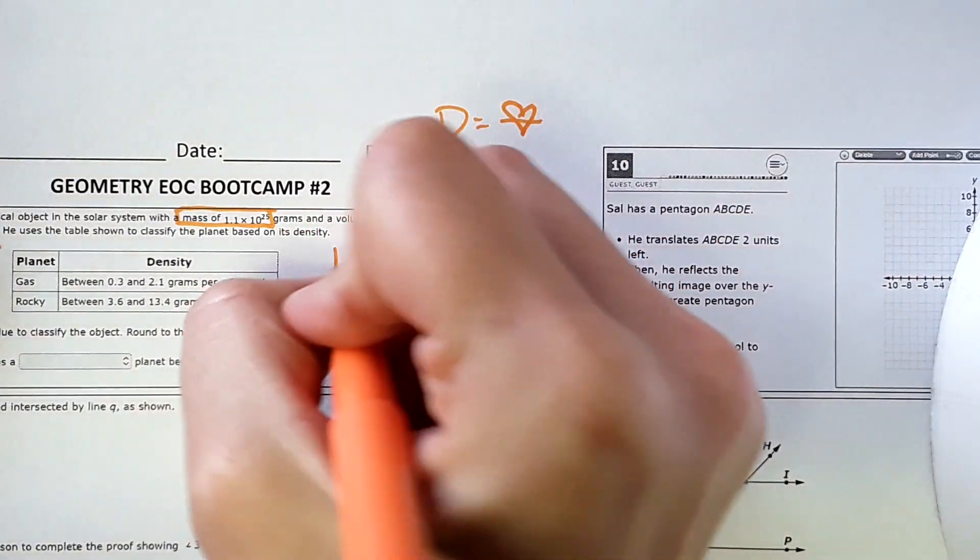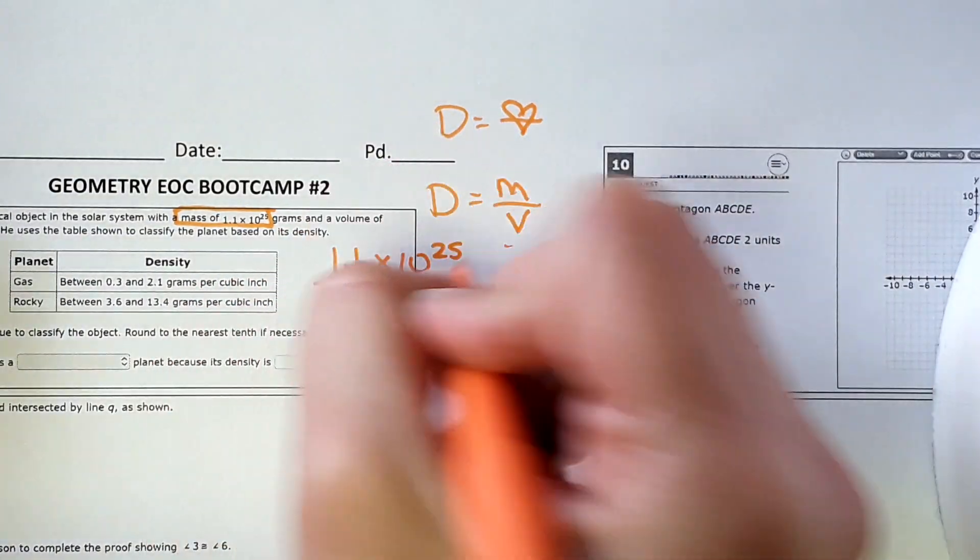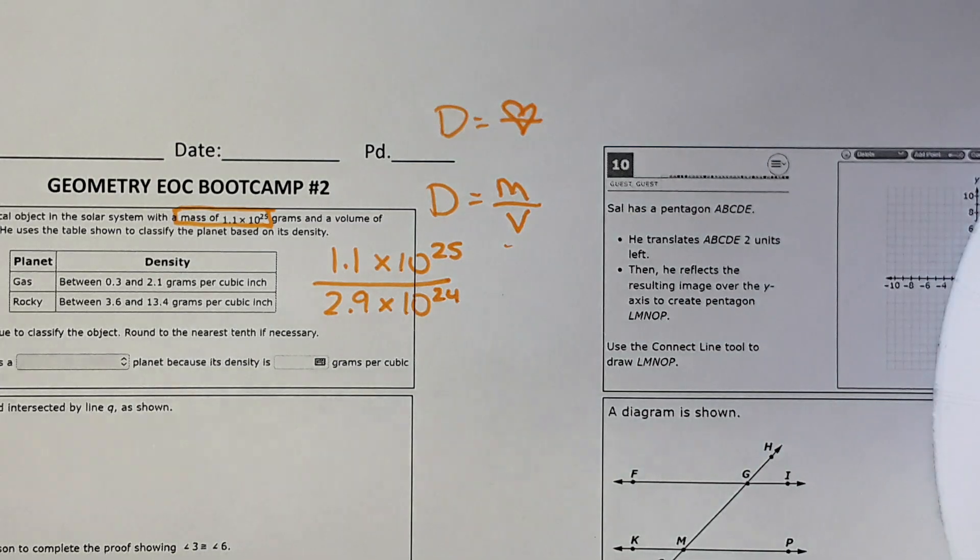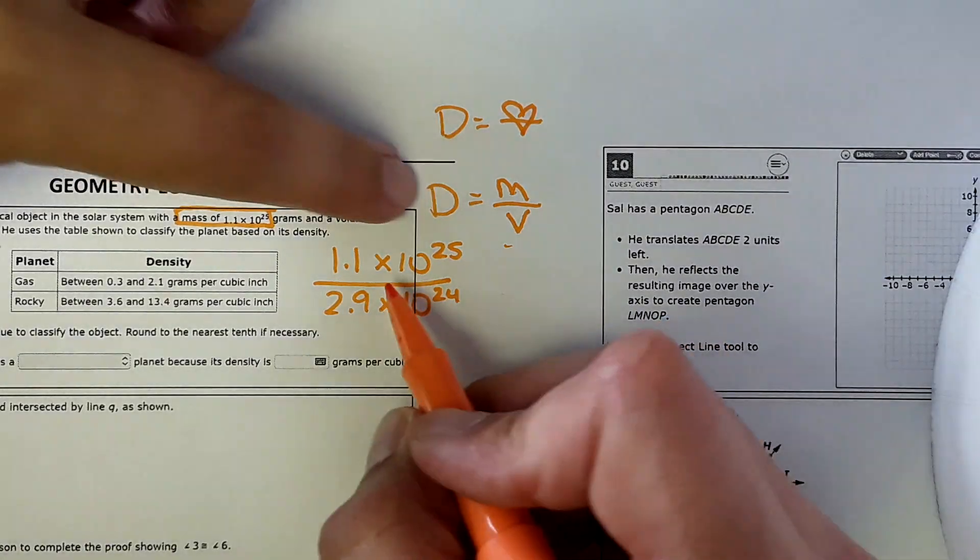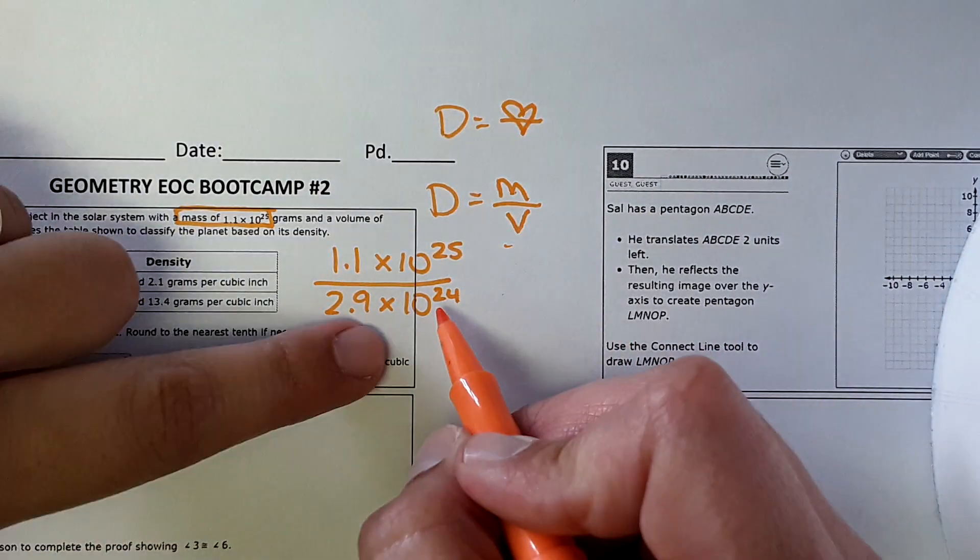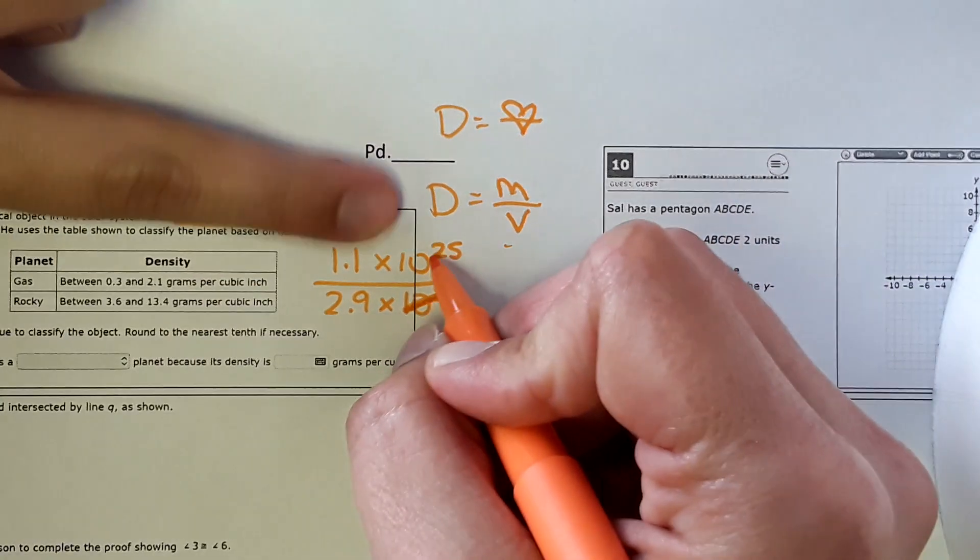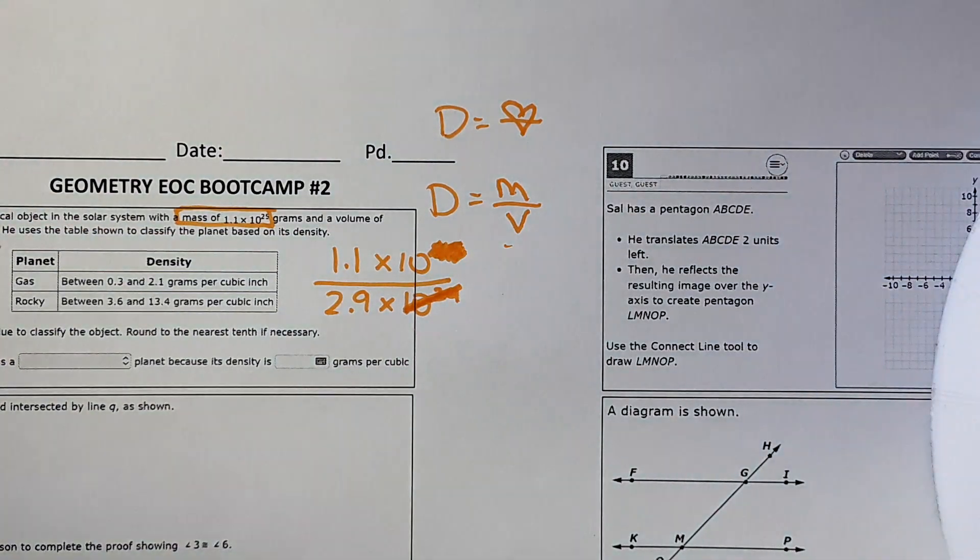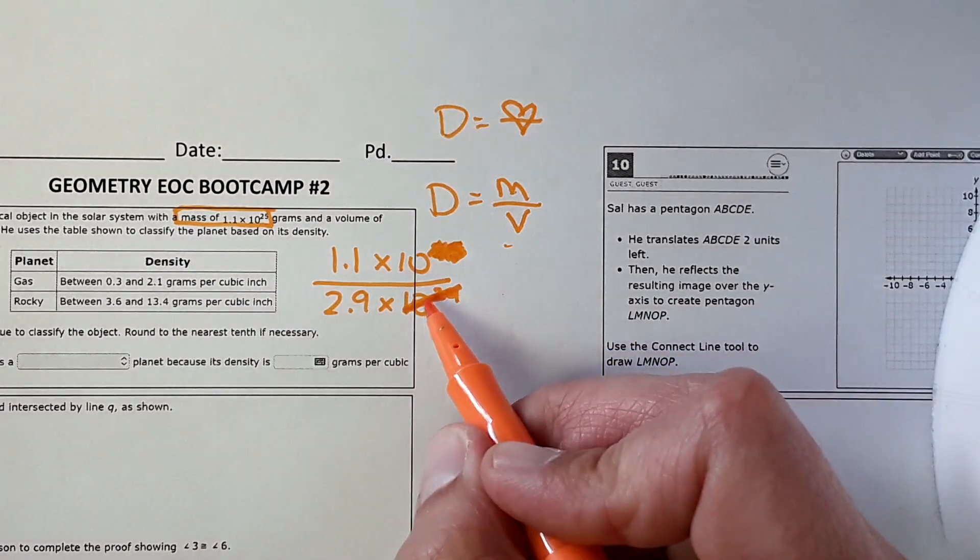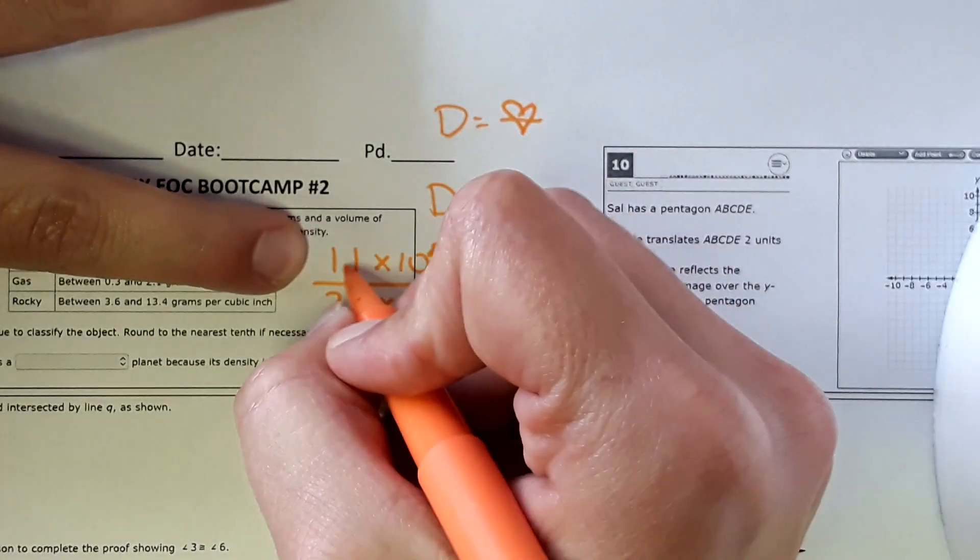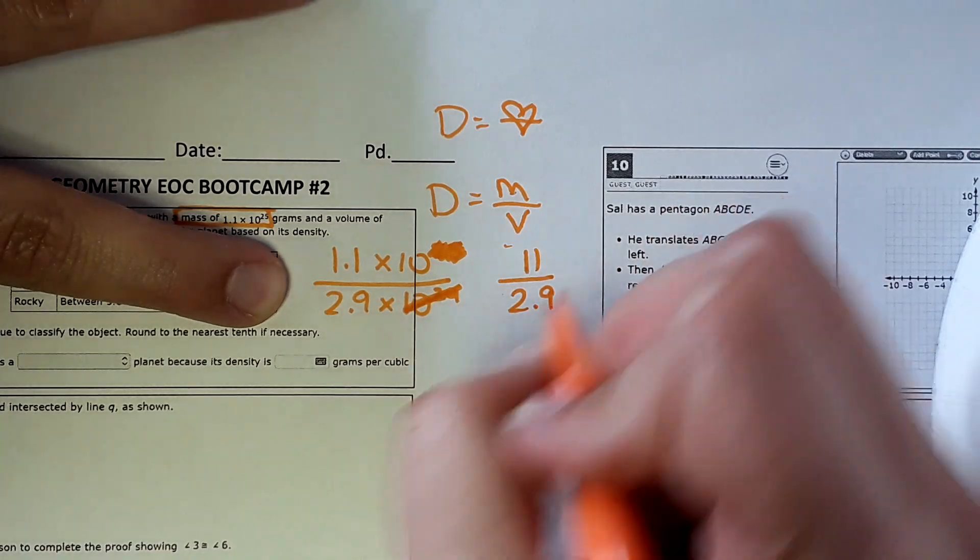We're going to put one number on top of the other. The mass is 1.1 times 10 to the 25th power, the volume 2.9 times 10 to the 24th power. Putting that in the calculator may not be realistic, especially since you're only going to be able to use a basic calculator on testing. So here's how you'd simplify it. This is like 25 tens multiplied and here's 24 tens. To simplify, all 24 these tens would cancel and we'd be left with 1.1 times 10 on top. Everybody follow that?